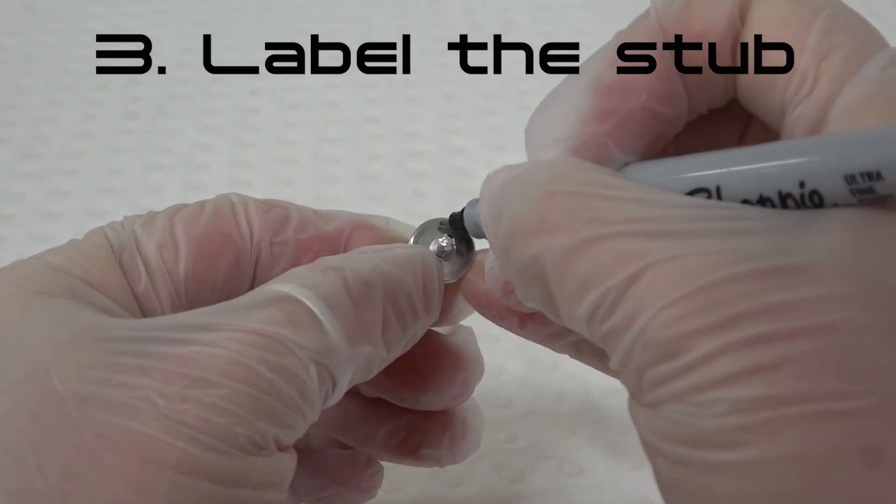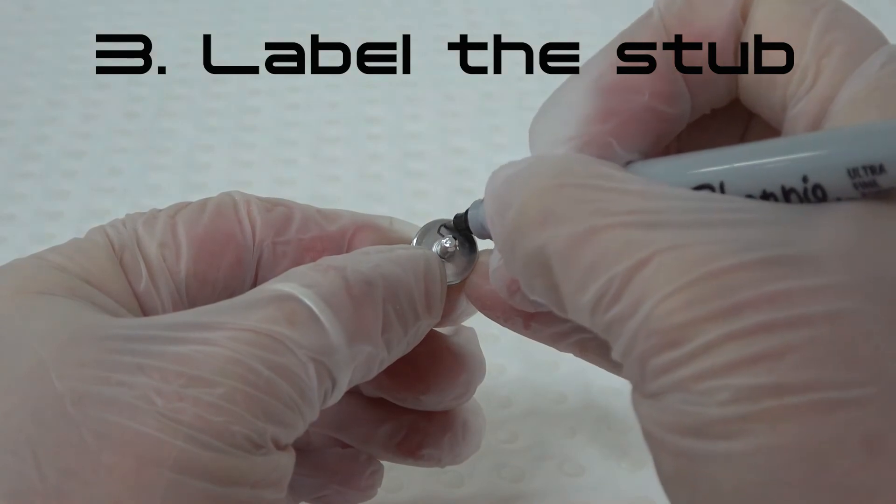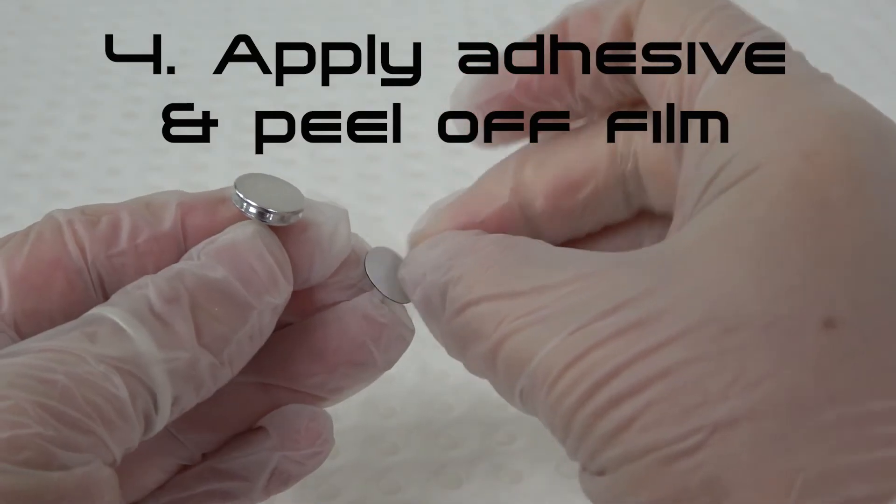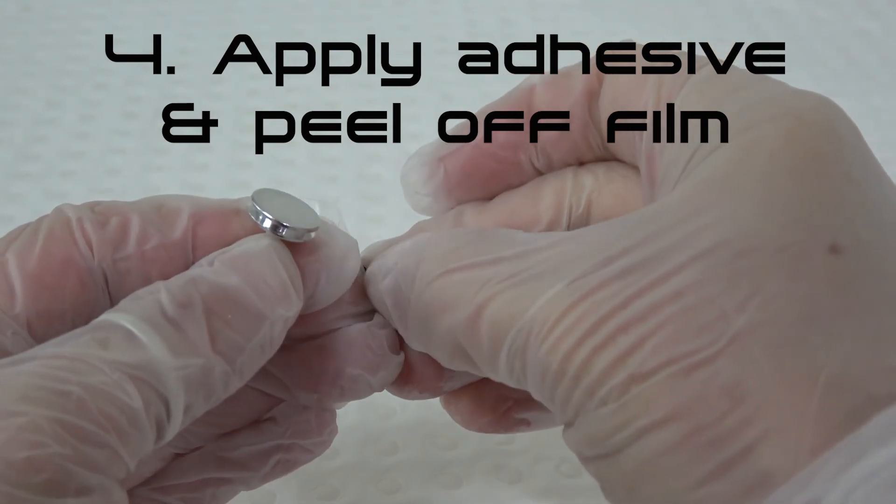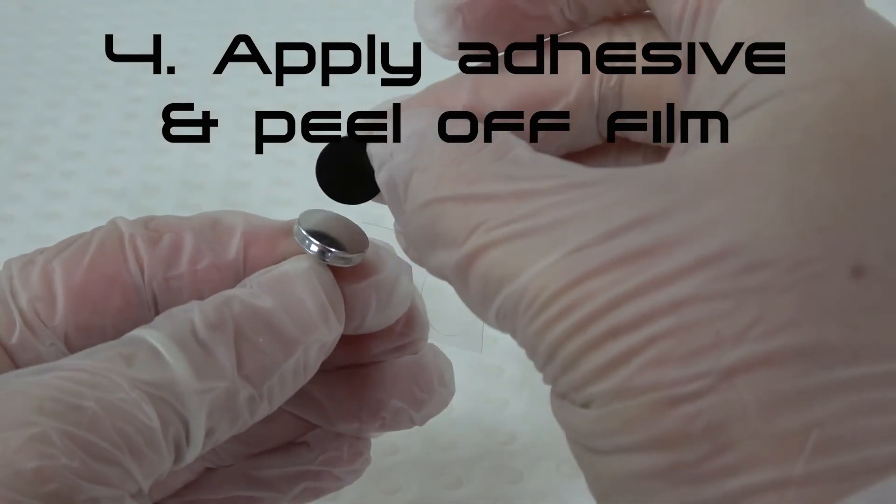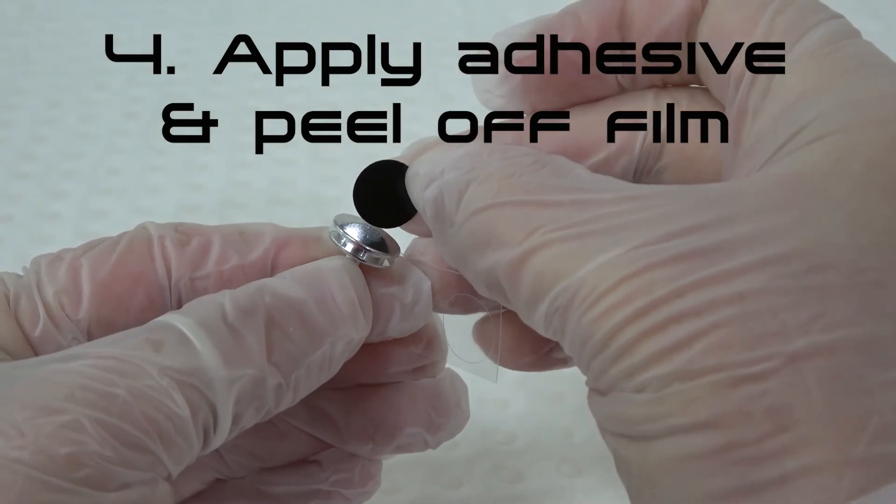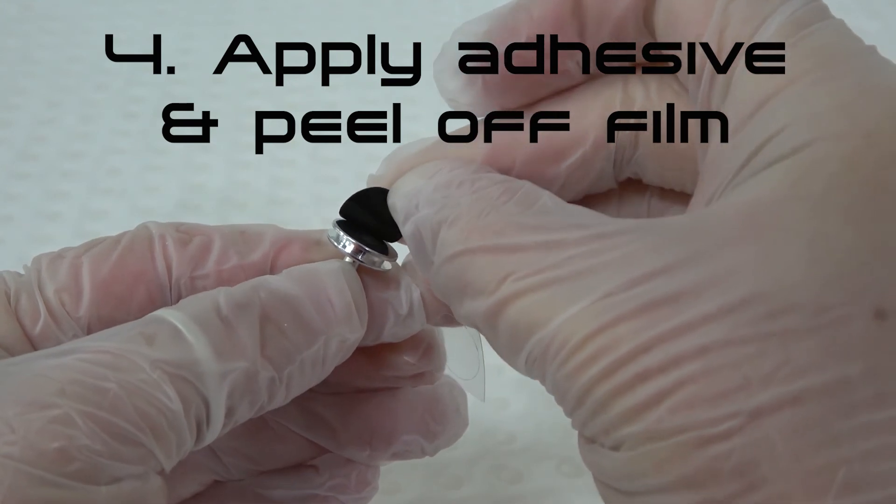Step 3. Label your SEM stub with the sample name or ID code. Step 4. Place one side of the double-sided adhesive onto the SEM stub. Remove the protective film to expose the surface of the double-sided adhesive.